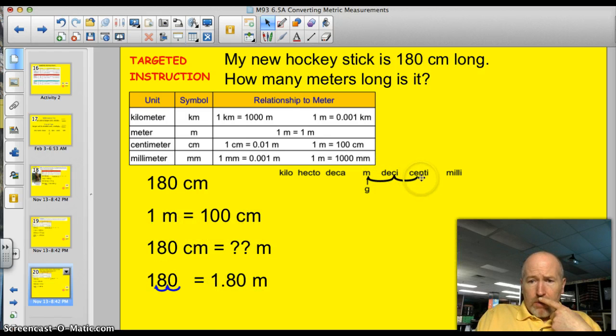I know that 1 meter is 100 centimeters. I'm going from centimeters to meters. So I only have two jumps, and I'm going to my left. So I have to look at this number. Where's my decimal going to be? It's going to be right here where my cursor is.